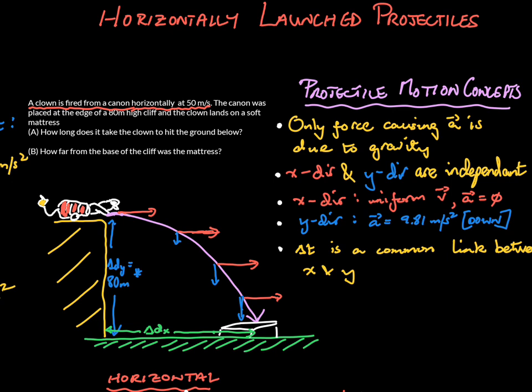The clown lands on a soft mattress. The questions are: How long does it take the clown to hit the ground below, and how far from the base of the cliff was the mattress? We're looking at Delta T and Delta D X, sometimes called the range.